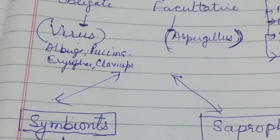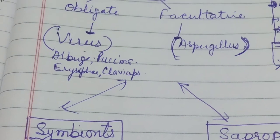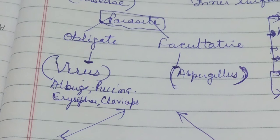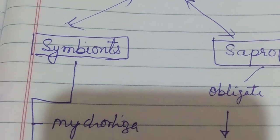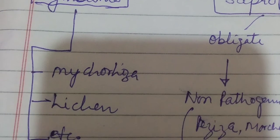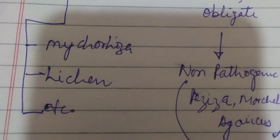In between parasites and saprophytes, there is a different group of organisms known as symbiotes. They are not saprophytes and not parasites — they do not harm the host or create diseases like parasites, nor do they live on dead organisms like saprophytes. Instead, they live together in an association of two organisms where both live together and help each other in some way. For example, lichens.